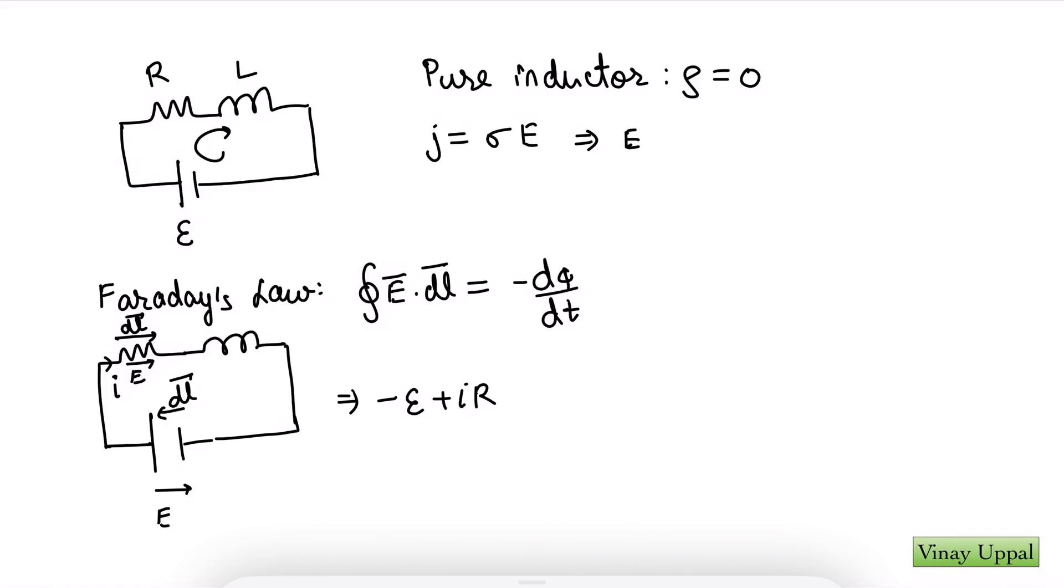So I can write E is equal to ρ J, where ρ is one over sigma resistivity. And because ρ is zero for finite currents, I'll have the net electric field inside the inductor is zero. And therefore, the left hand side for the inductor is going to be zero.